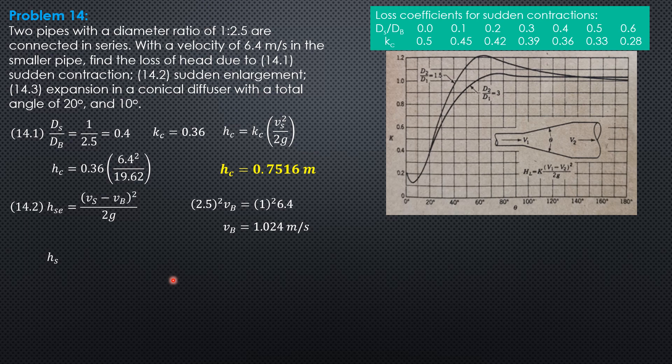Substitute sudden expansion, 6.4 minus 1.024 quantity squared over 19.62. The head loss due to sudden enlargement or expansion is 1.473 meters.